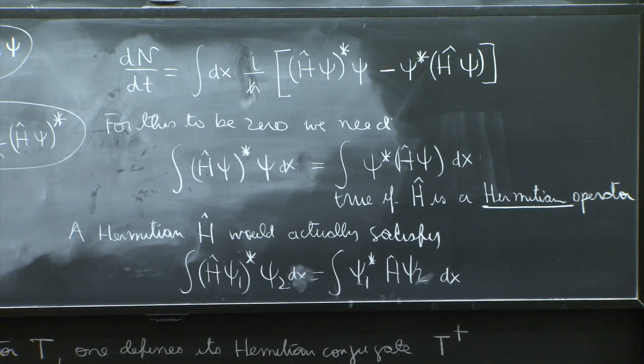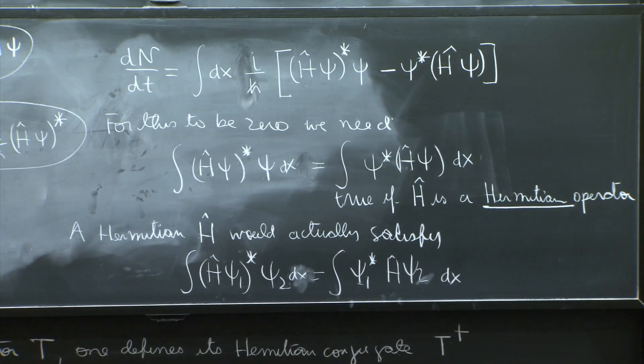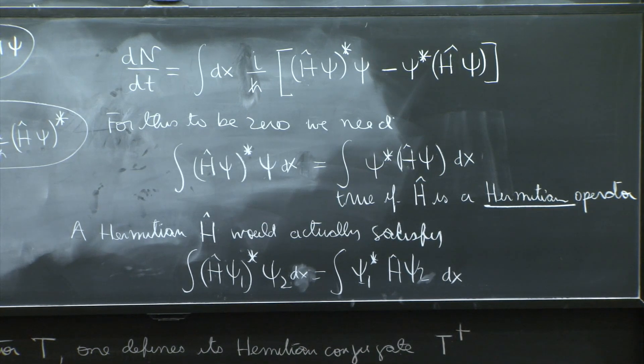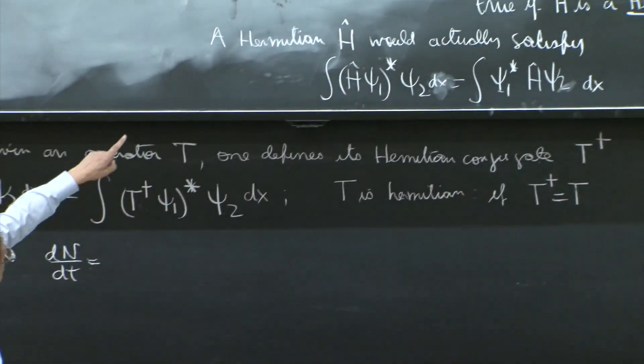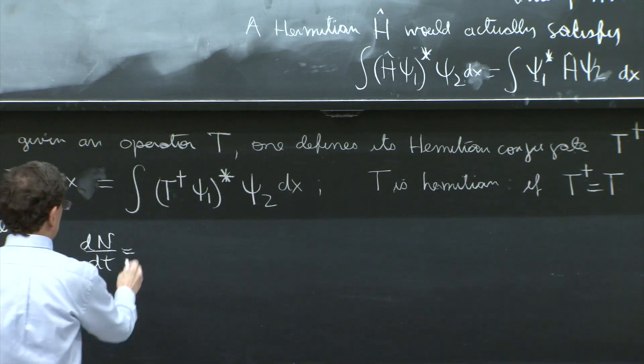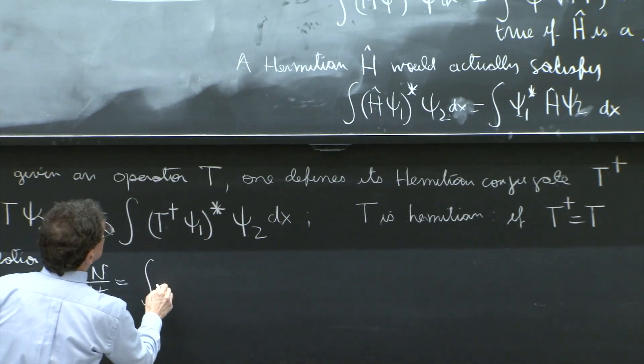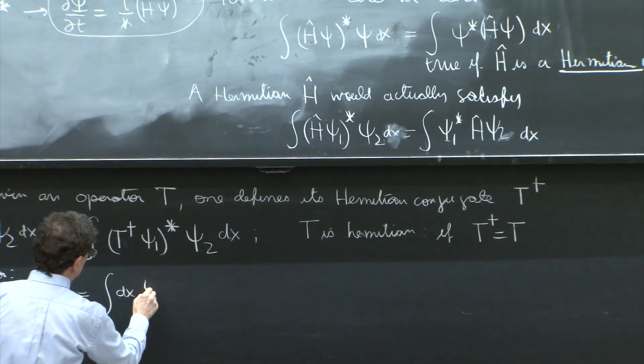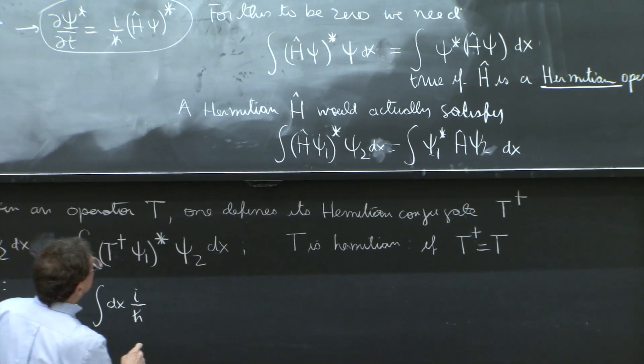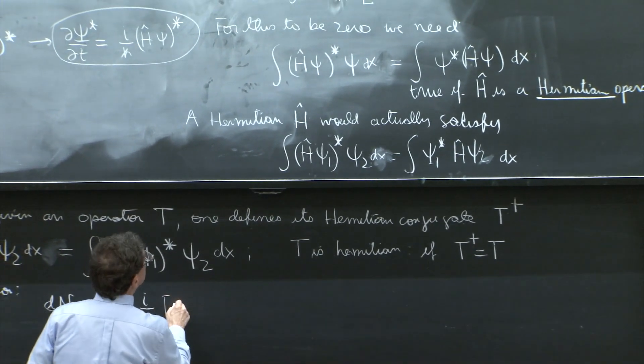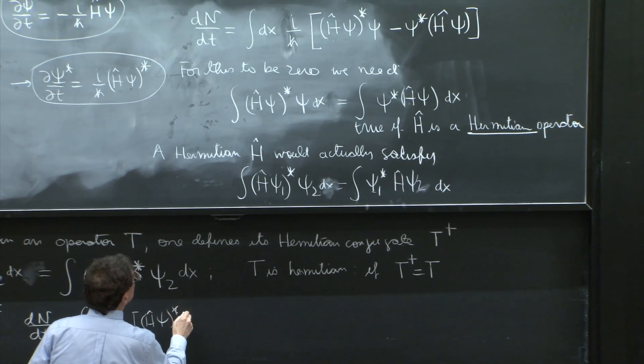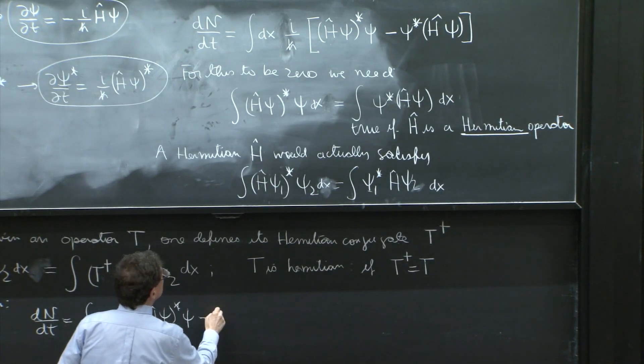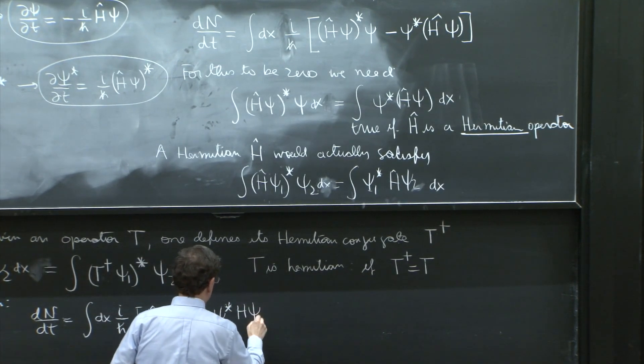The calculation, dn/dt is equal to this thing over there, integral dx i over h bar. I'll still copy it here, H psi star psi minus psi star H psi.